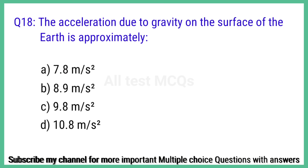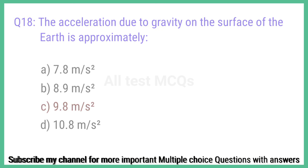Question number 18. The acceleration due to gravity on the surface of the Earth is approximately? The right answer is option C: 9.8 meters per second squared.